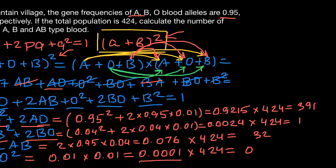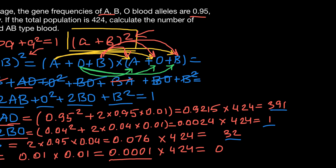Adding these three numbers — 391 + 1 + 32 — gives 424, matching the total village population. We can conclude that in this village we expect only three blood groups: blood group A, blood group B, and blood group AB, with none belonging to blood group O.